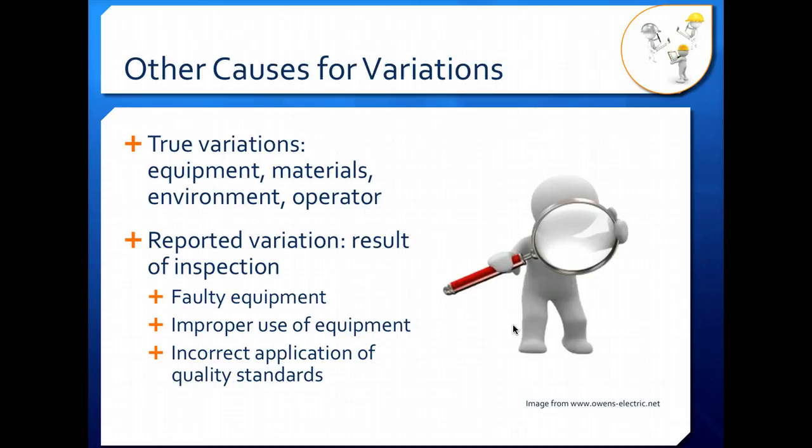That's the important thing about reported variation: it's variation that you think is in the process but may not actually be there because something is going wrong with your data collection procedure. In general, you want the variation from inspection—this reported variation—to be less than one-tenth, or less than 10 percent, of the variation from other sources, your true variation.